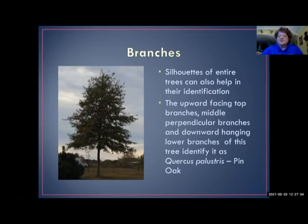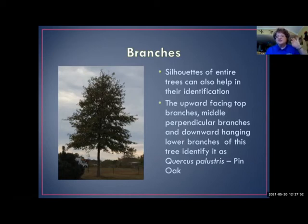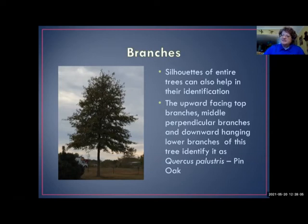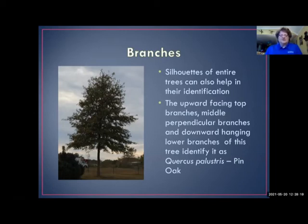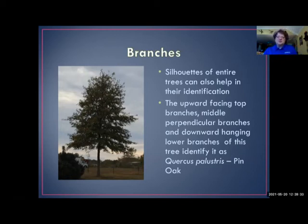Sometimes silhouettes of entire trees can help in identification. Being in extension I'd drive up and down I-40 and started identifying trees at 65–70 miles per hour. The upward-facing top branches, very perpendicular middle branches, and lower branches that point downward is a very distinct pattern of the pin oak family — Quercus palustris. This is probably one of the easiest whole-tree branching patterns to identify, other than a Bradford pear.